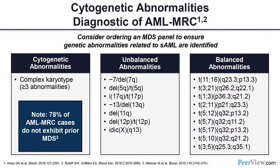Regarding cytogenetic abnormalities in myelodysplasia-related changes: complex karyotype requires three or more abnormalities. Note that about 78% of cases with myelodysplasia-related changes do not exhibit a prior history of MDS. There are multiple unbalanced and balanced cytogenetic abnormalities associated with this category.